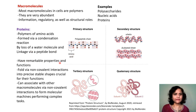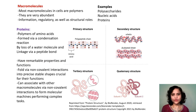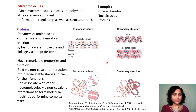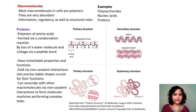Polypeptides can fold into different structures. Common secondary structures are alpha helices, formed by hydrogen bonding between amino acids on the same chain, and beta-pleated sheets, which are another type of secondary structural element.